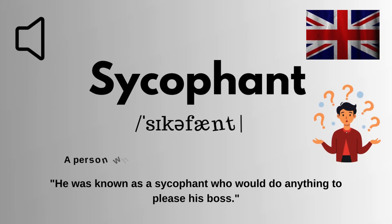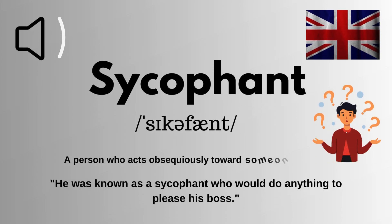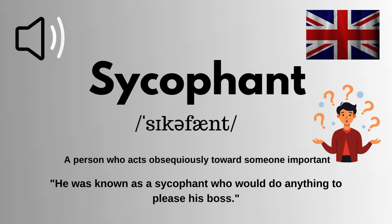We are looking at how to pronounce the word sycophant correctly in English. It is spelled as S-Y-C-O-P-H-A-N-T. The correct pronunciation of this word is sycophant.